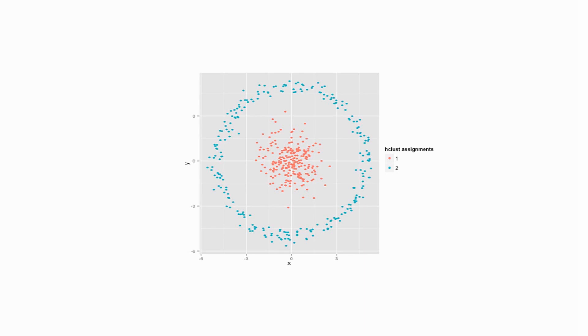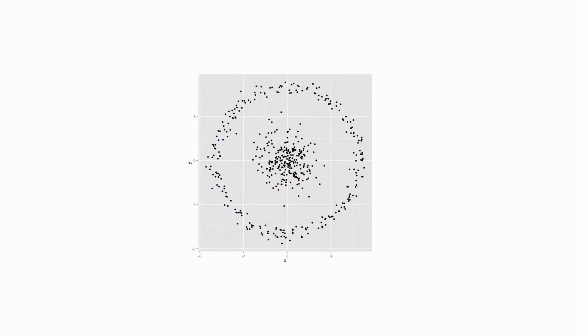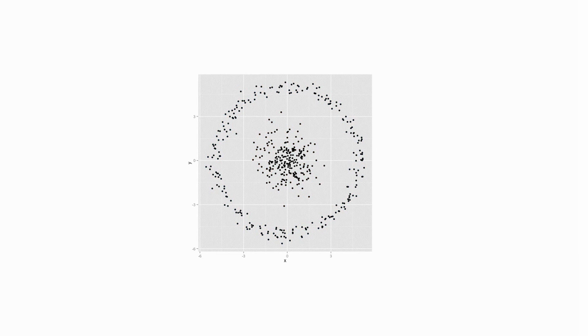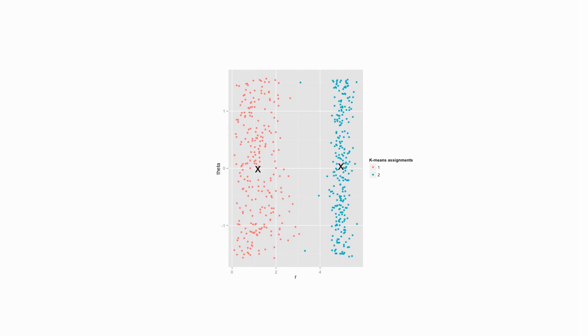To show you how the k-means clustering algorithm is dependent on the Euclidean space in which the data points lie, we take this dataset and transform it into polar coordinates. Then the result of the clustering looks like this. In this case, the clustering works perfectly.